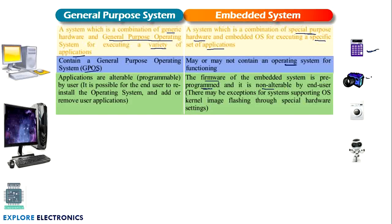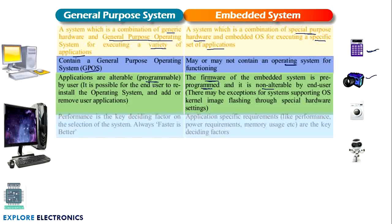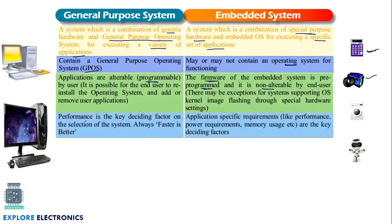A camera is going to capture things and store them in a memory card — that is the purpose of the camera. The firmware cannot be changed. In a general purpose system, performance is the key deciding factor when selecting the system. How fast is it? If it is faster it is better. That is how we choose the general purpose system.